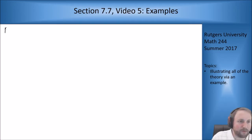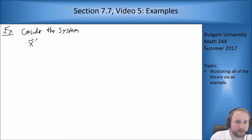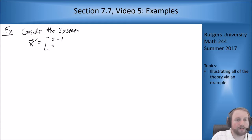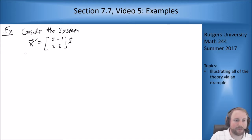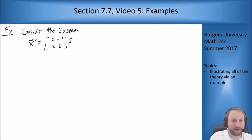For this example we want to consider the system x prime equals the matrix [[5, -1], [2, 2]] times x. What I want to do from this is start by doing all the theory stuff and then use it to solve the problem at the end.